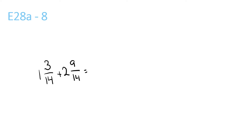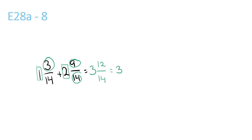For this question, you can just do 1 plus 2, which is 3. And we've got 3 plus 9, 12. And bring the 14 over, then simplify the 12 over 14. That would be 3 and 6 over 7.